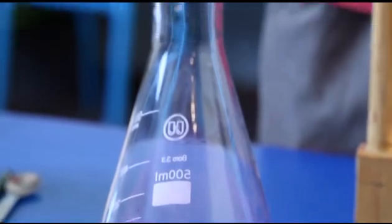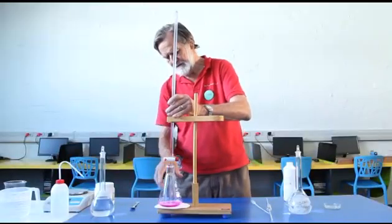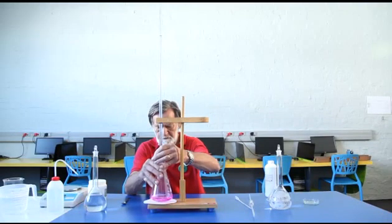Place the conical flask with sodium hydroxide below the burette and slowly run acid into the flask. Swirl the flask all the time and stop adding acid the moment the indicator changes from red to clear.